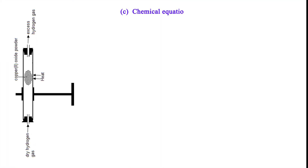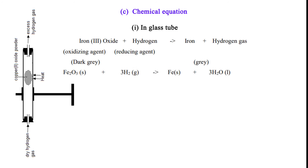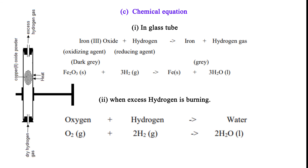C. Chemical equation. 1. In glass tube: iron(III) oxide plus hydrogen to iron plus water. 2. When excess hydrogen is burning: oxygen plus hydrogen to water.